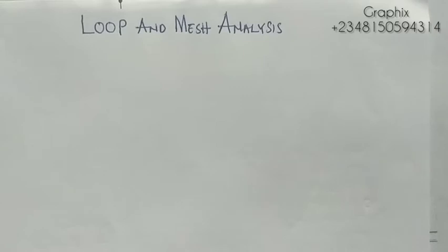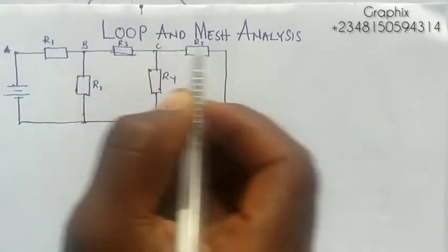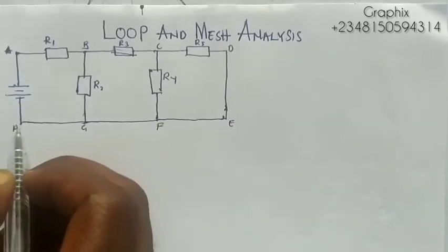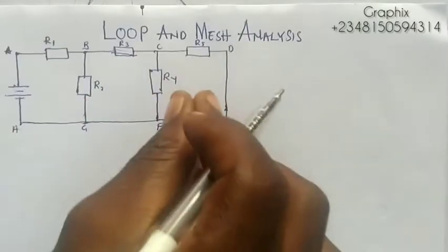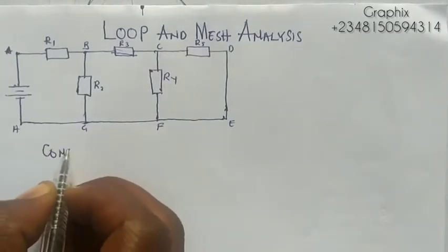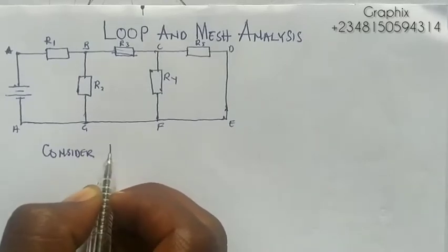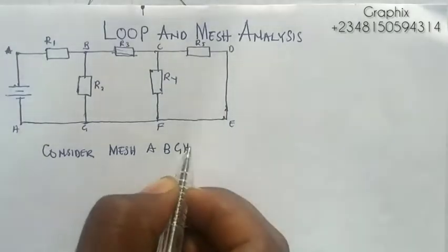Good day, my name is Graphics. Today we'll be looking at loop and mesh analysis. A mesh is a loop with no other loop inside. For example, if I have a circuit a-b-c-d-e-f-g-h, considering everything together is called a loop. But if I take each individual section, like a-b-g-h, that is called a mesh.